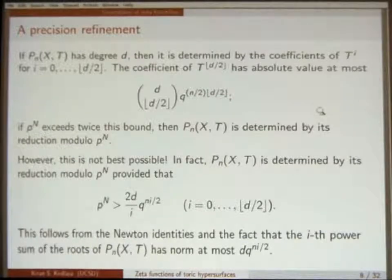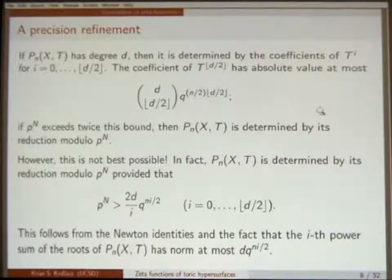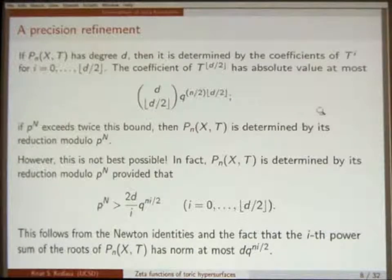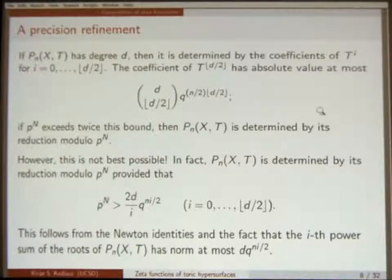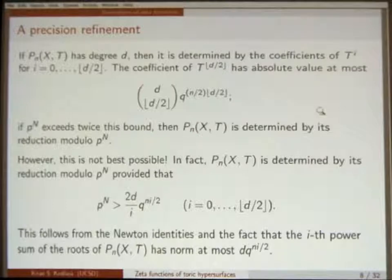The extra coefficient you need to determine the sign might be zero, so you might need one more. That doesn't happen generically. Ideally you can determine the sign some other way. For example, when n is odd, the sign is always plus, so that's not an issue. The issue is when n is even, like for a K3 surface, you might have to do a little bit more. But in practice, you can try both signs, and typically only one of them will give you a valid polynomial.